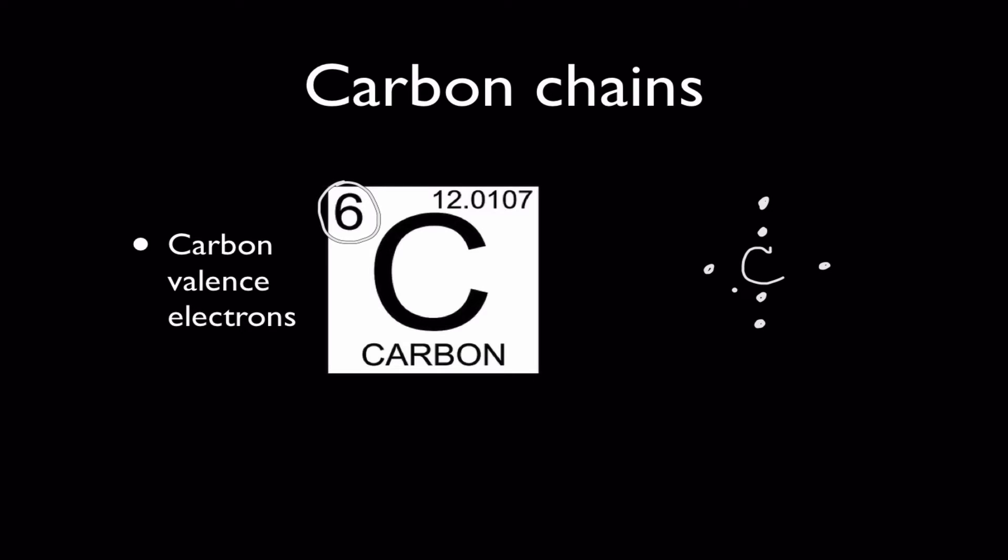And if you remember there is stability when you have eight electrons in your outermost energy level or what we call the octet or the rule of eight here. So we have four vacancies here. So this means carbon as an atom wants to form four covalent bonds to complete its octet and to fill its valence up with eight electrons. So that means carbon atoms will always form four covalent bonds.